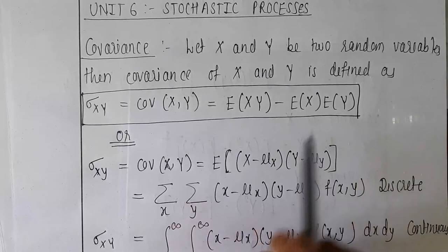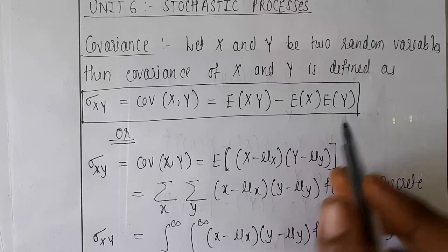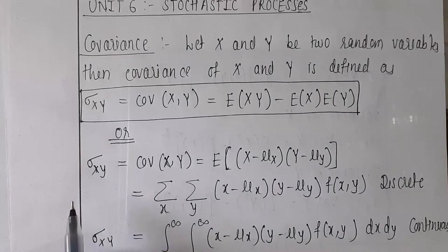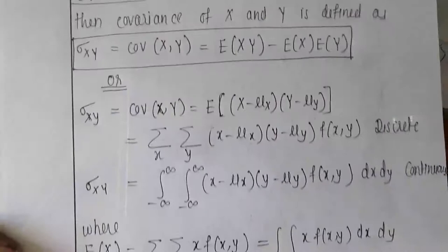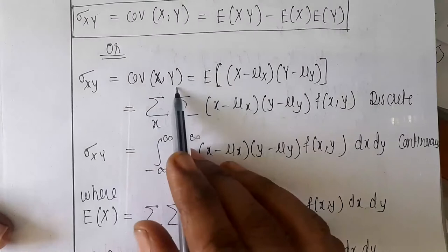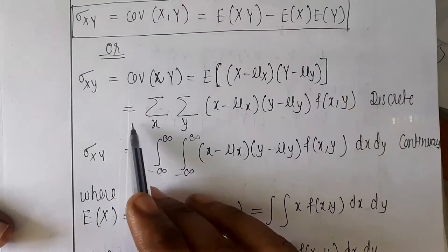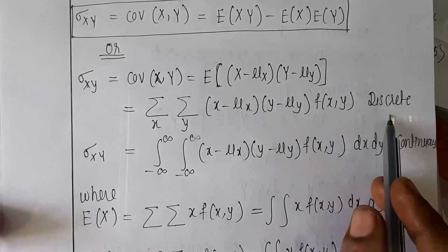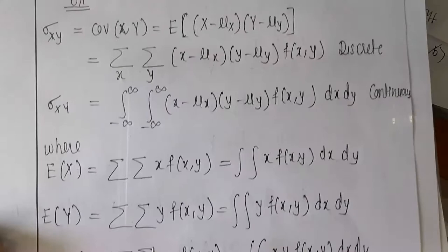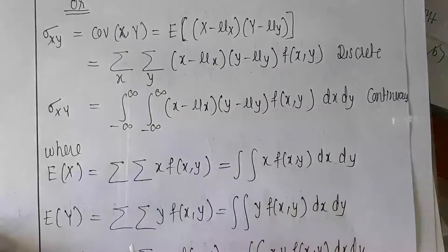Covariance is related to expectation, which we have already studied in the previous chapter. The formula is E[XY] minus E[X] times E[Y]. Covariance is related with the joint probability function. So if we know f(x,y), the joint probability function, we can find E[XY] - E[X]·E[Y]. Alternatively, covariance of X and Y equals E[(X - μx)(Y - μy)], which is a double summation over X and Y of that term multiplied by f(x,y). For discrete variables we get summation; for continuous, integration.